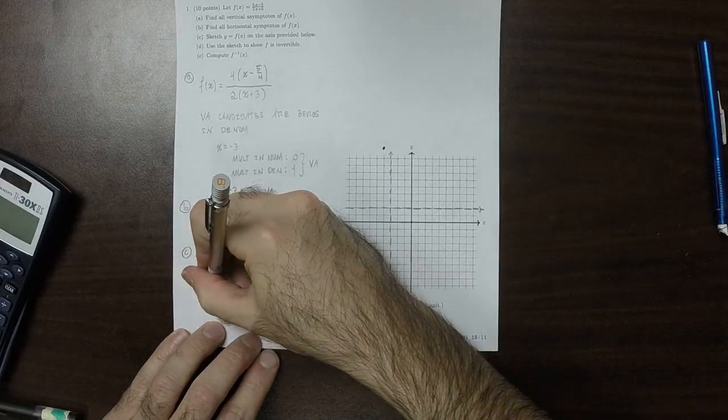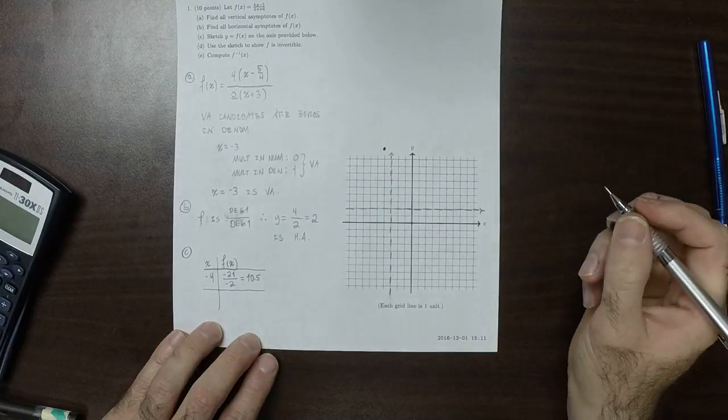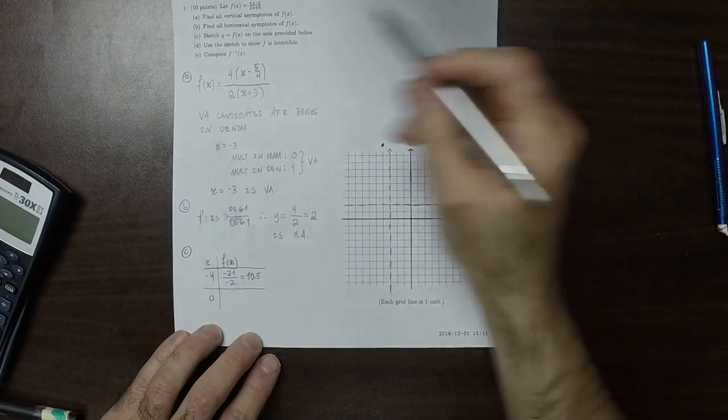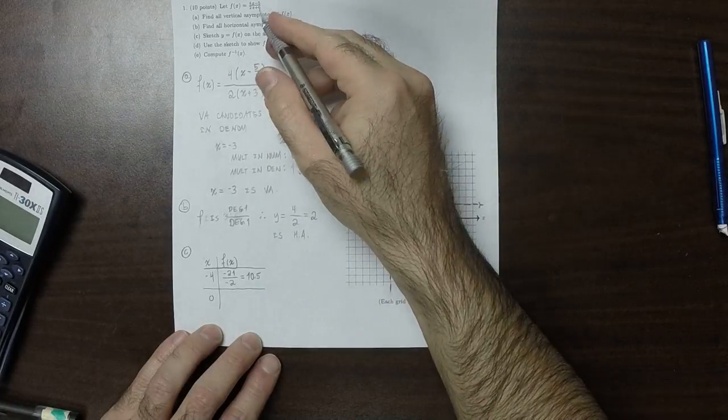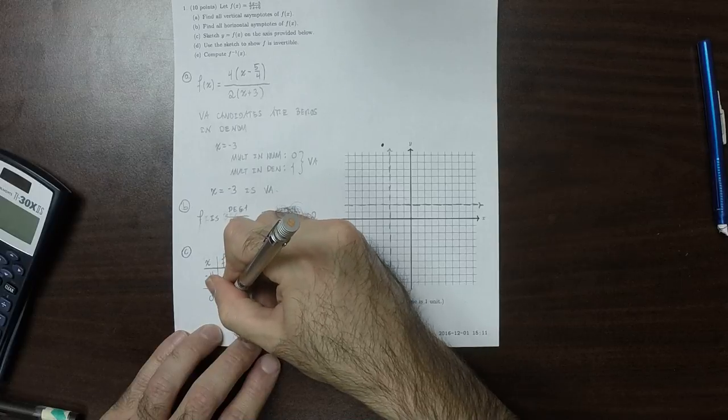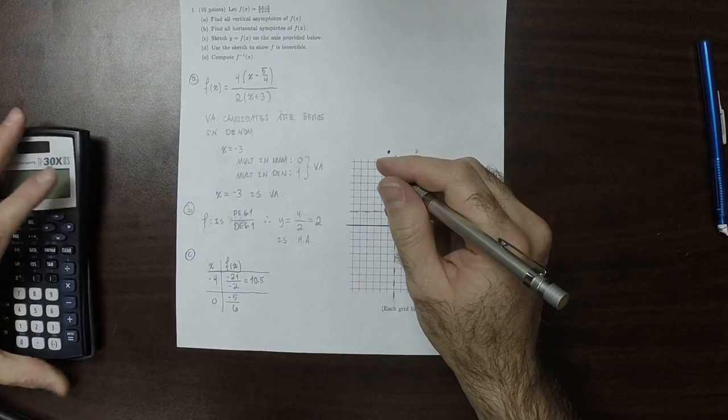And plugging in, say, 0. X is 0, that would be negative 5 over 6. Negative 5 over 6, and that's a little bit less than negative 1.